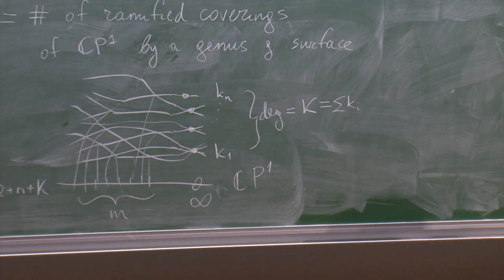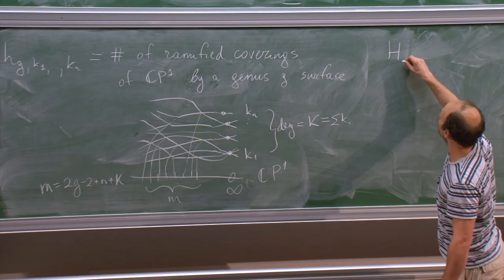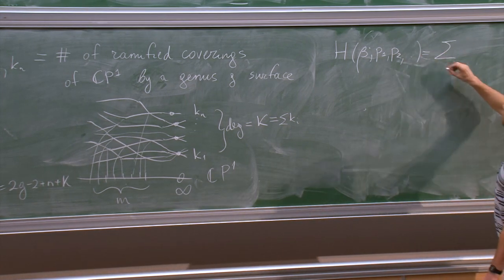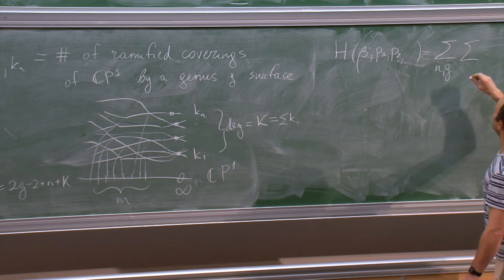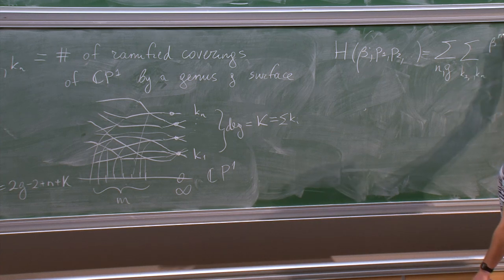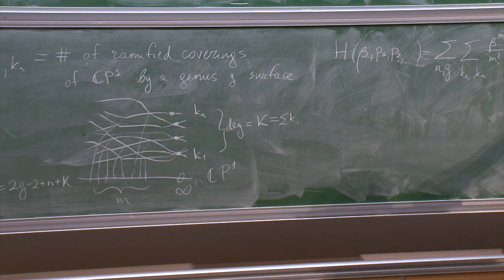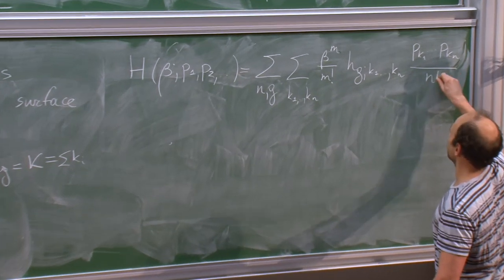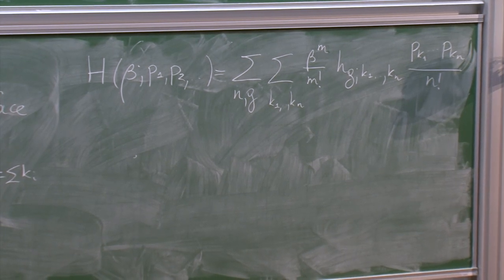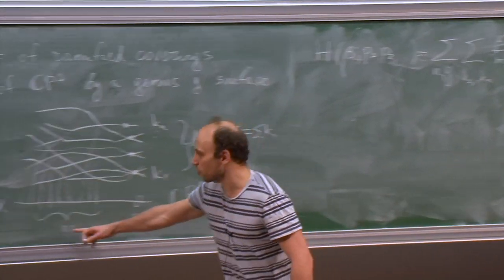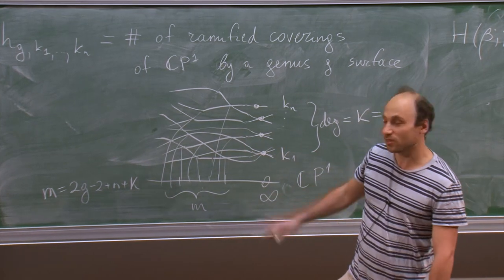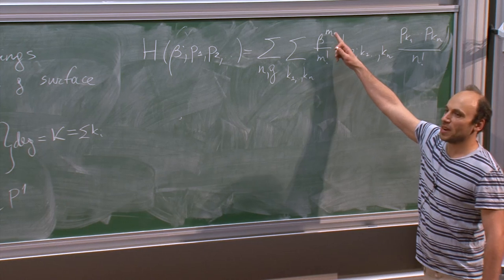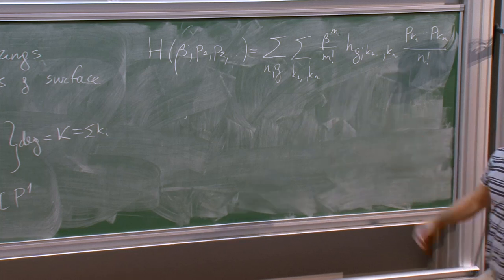To compute these Hurwitz numbers, let me first introduce the generating series. H(β, p₁, p₂, …) is the sum over n and g, and sum over k₁, …, kₙ. The genus g and the number M give the same information — M is expressed from the genus, and I could write M and express g from M. That would be equivalent.